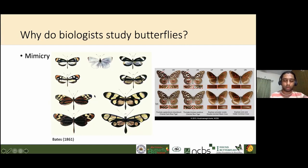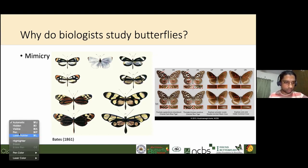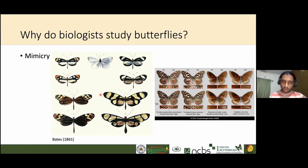Why do biologists study butterflies? One of the most important reasons is that butterflies have been the textbook, classic example for studying mimicry in nature. Without butterflies, our understanding of mimicry would be incomplete. There are two types of mimicry — I've illustrated both here and will talk about them in detail later. Studying butterflies has given us in-depth knowledge of how mimicry occurs and operates in nature.